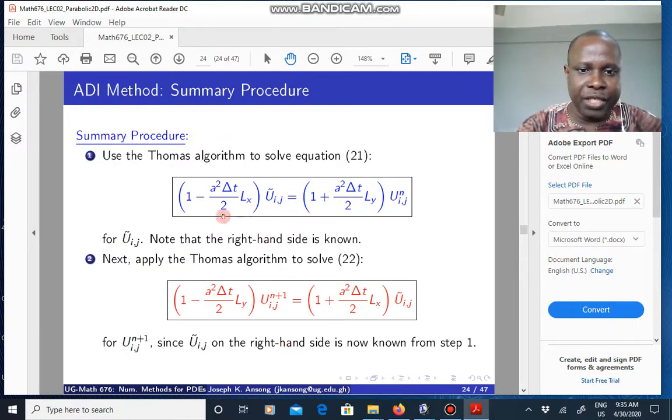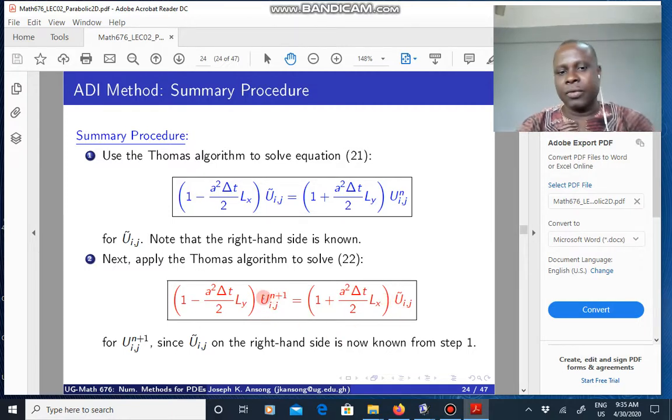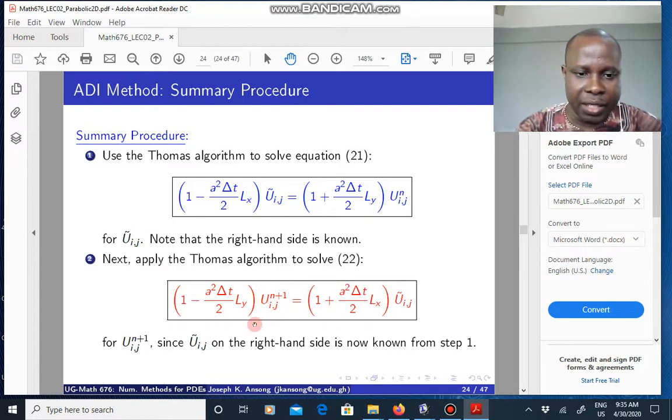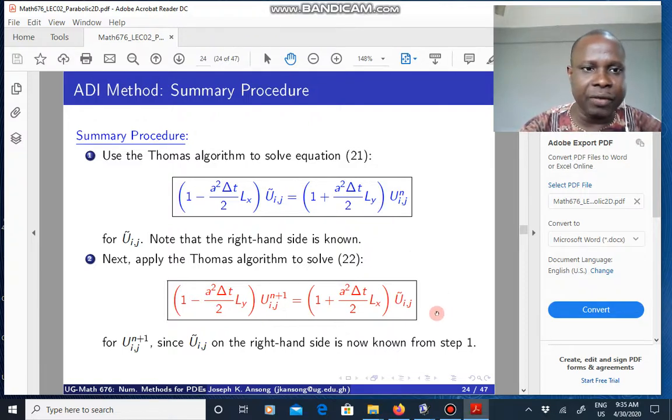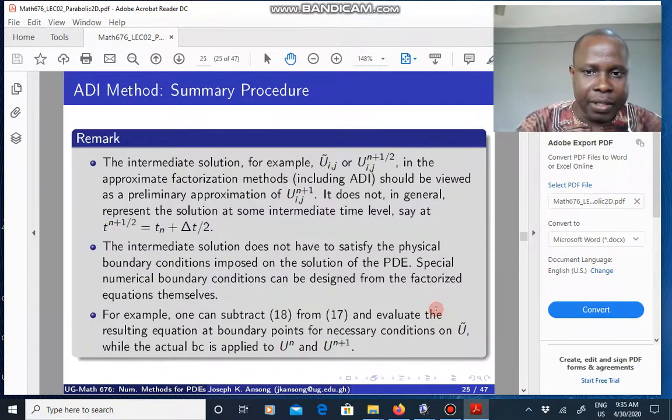This is a summary of the procedure. Solve this equation for the intermediate approximate solution using the Thomas algorithm, because the right-hand side is known. And then once you have U tilde, you plug them in here. Then the right-hand side of the next step is known, and then you solve for the final solution at time level n plus 1. And that gives you your final solution. So that is the summary of the procedure for the ADI method.